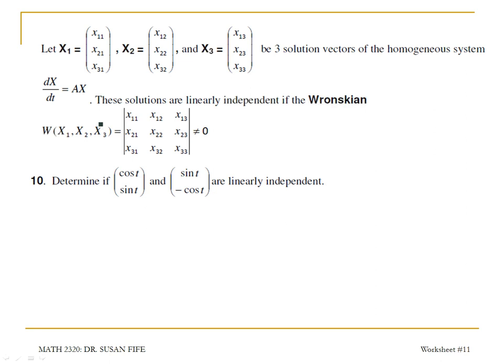On number 10, again we have a 2 by 2 system. And so my Wronskian is gonna be the determinant.